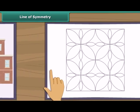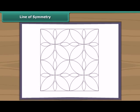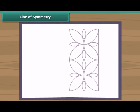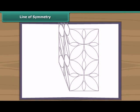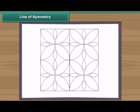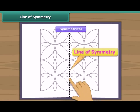Let's take this figure now. When we fold this figure from the center, we will see that the two parts of this figure are coinciding. So we will see that this figure is symmetrical and this line is the line of symmetry.